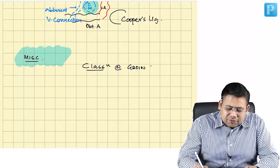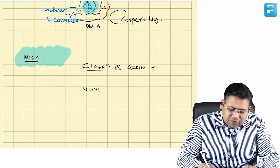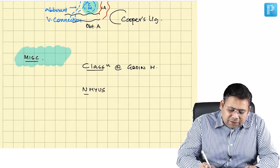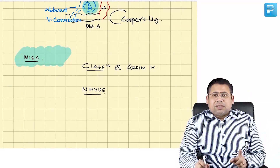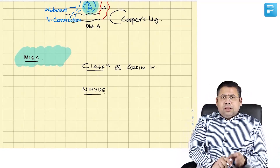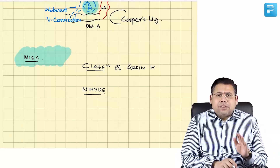We have a very standard classification of groin hernia which is known as Nyas classification. According to this classification we have four categories: 1, 2, 3, and 4.